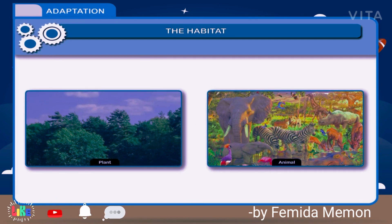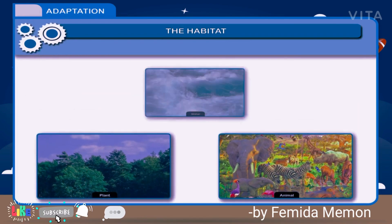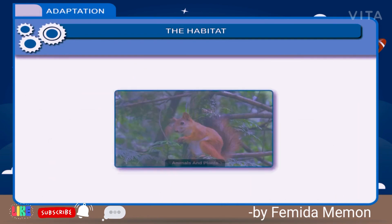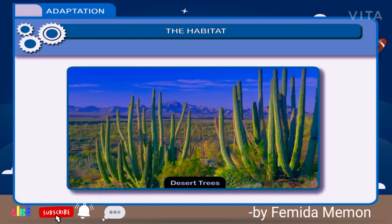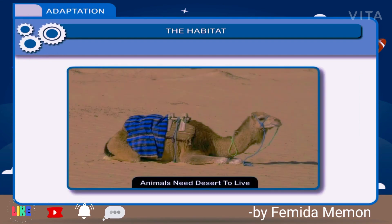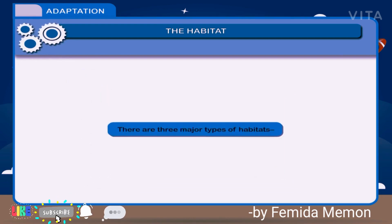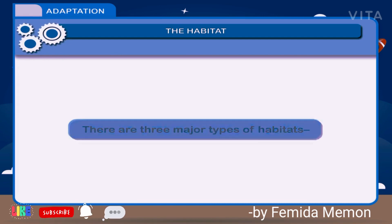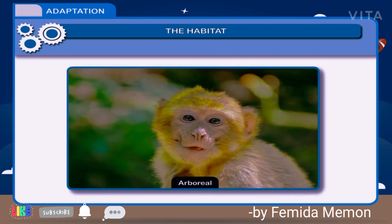Different animals and plants require different habitats. An aquatic plant needs water to survive. An arboreal animal needs trees. Desert animals need desert to live. Habitat provides food, shelter and proper environment to an organism. There are three major types of habitats: terrestrial, aquatic, and arboreal.